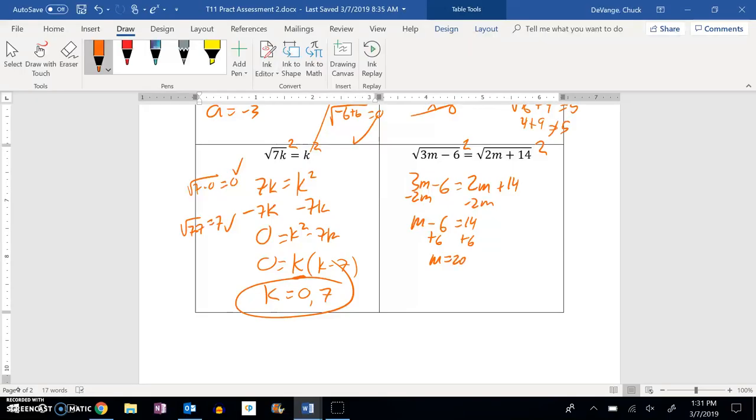And let me plug it back in and check. So I'm going to check. Square root of 3 times 20 minus 6. Does that, in fact, equal the square root of 2 times 20 plus 14? Let's see.